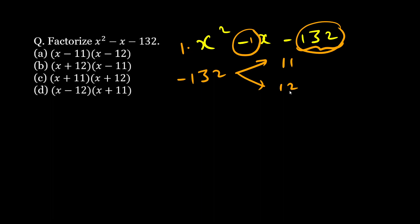What two numbers can I take? I can take 11 and 12, right? And since I have a minus sign, I will take minus with the larger number, so minus 12 plus 11. So what I can do is I can rewrite this as x squared minus 12x plus 11x minus 132.